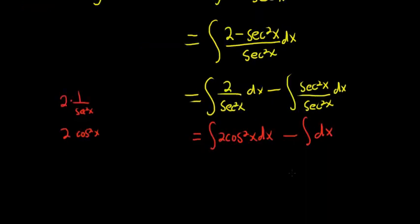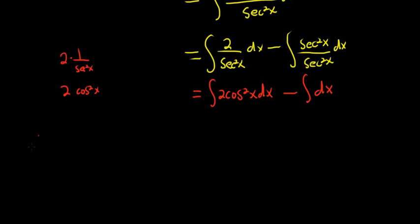So to integrate cosine squared, there is an identity we can use, right? So cosine squared x is equal to 1 plus cosine 2x all divided by 2. So that's how you integrate cosine squared is you use this identity.